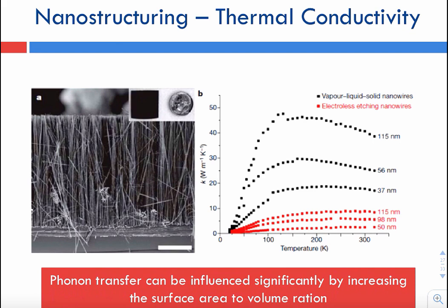How do we do this nanostructuring? It comes in different flavors. One technique is, instead of using a bulk semiconductor, we use nanowires of the same material. Silicon is actually a very bad thermoelectric material because it is thermally very conductive — it can have a good Seebeck coefficient and low electrical resistivity, but its thermal conductivity is very high. However, researchers at Berkeley have shown that the thermal conductivity of silicon can be dropped significantly if we form silicon nanowires.